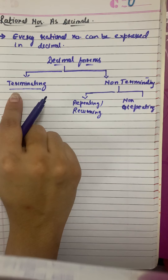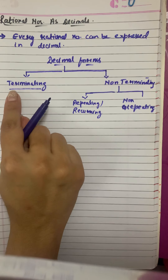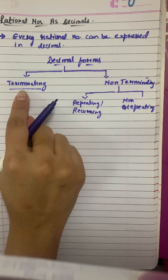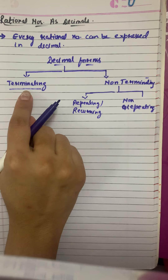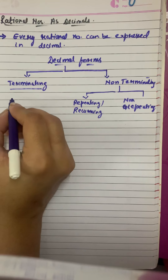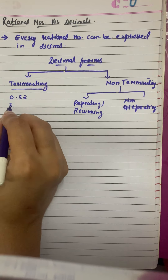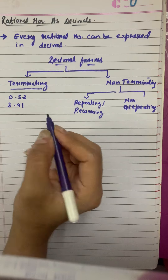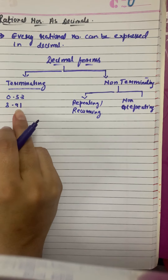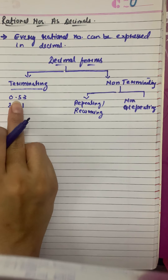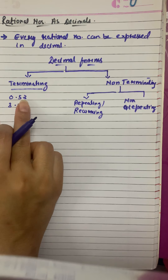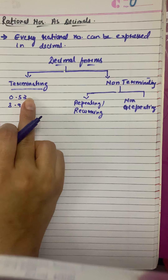Terminating decimals — as the name suggests, this is where the division terminates. In terminating decimals, the digits after the decimal terminate. Examples are 0.53 and 3.91. You can see clearly in both examples that the digits after the decimal are terminating — the division ends here.